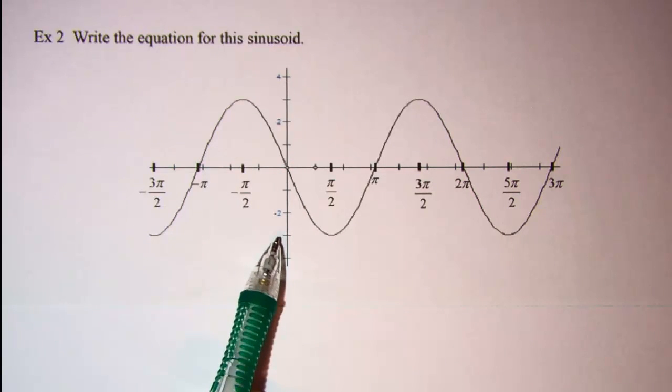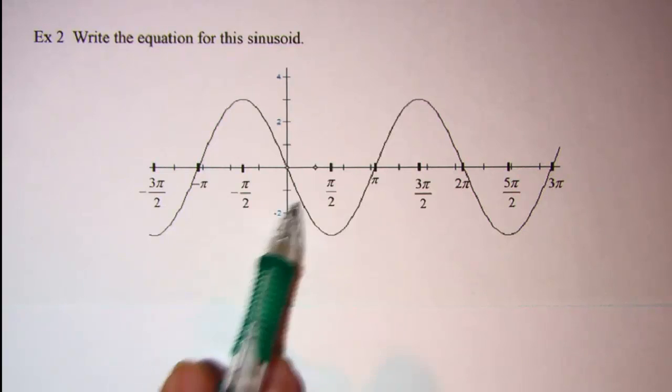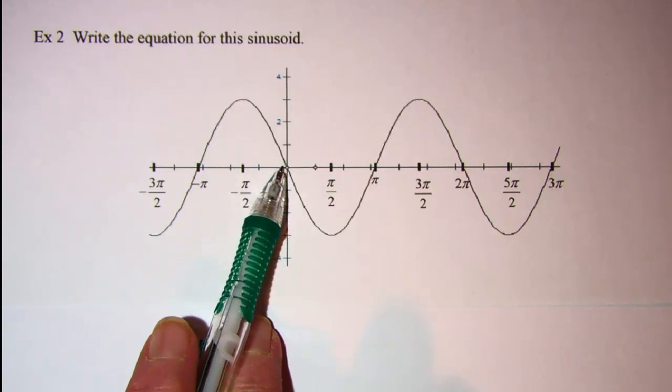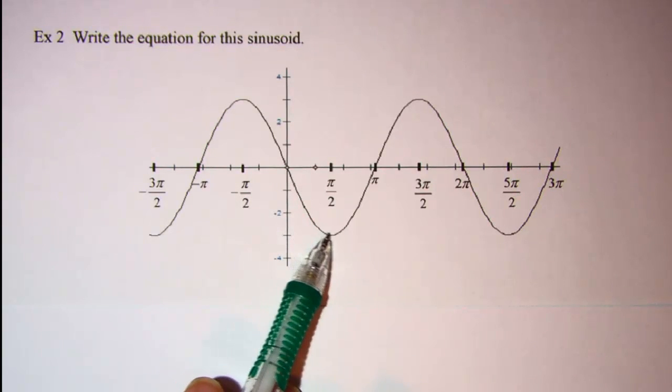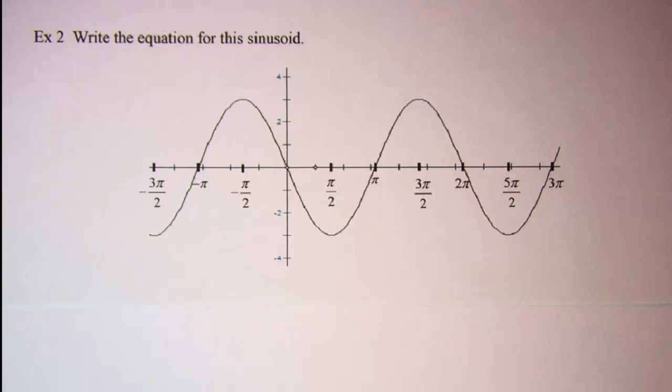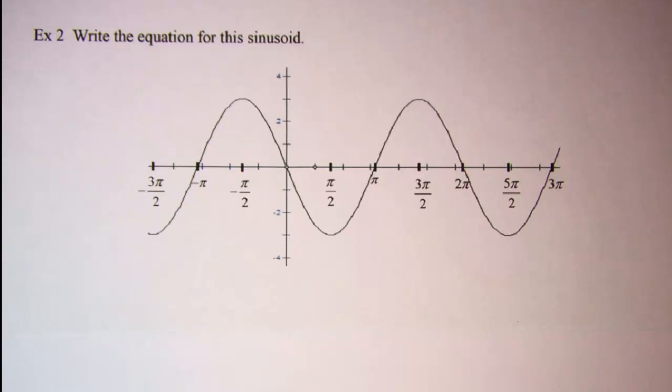The amplitude is 3, but since it heads down from the origin that means that our coefficient of our sine curve is negative 3. So the equation is y equals negative 3 sine x.